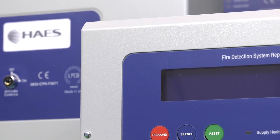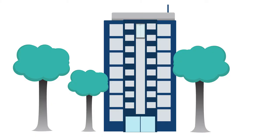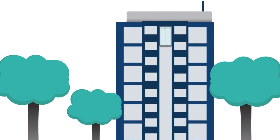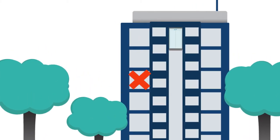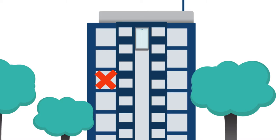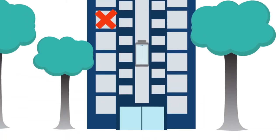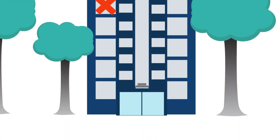Other programming features include manually being able to disable specified zones. This is useful if work is being carried out on site. Control of plant — for example, disabling lifts by securing them at ground level.